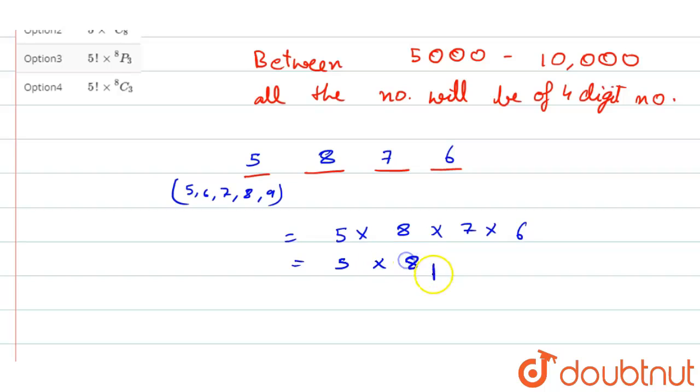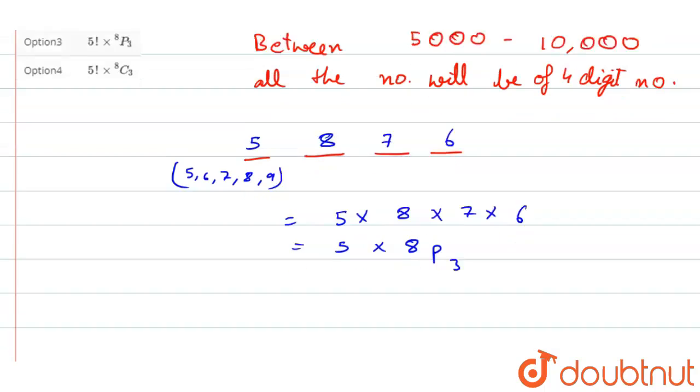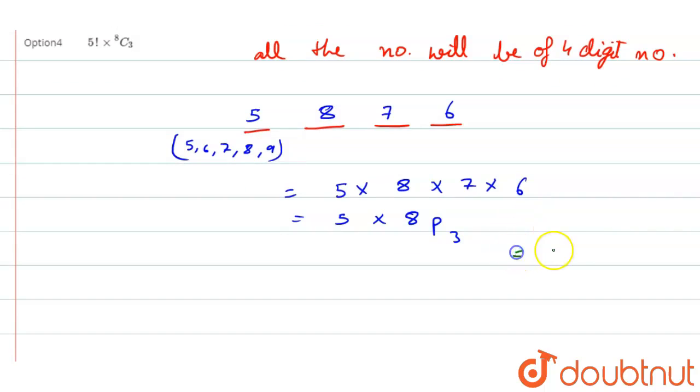And here if we simplify 8P3, we will get 8P3 equals to 8 factorial by 5 factorial, that is equal to 8 × 7 × 6.